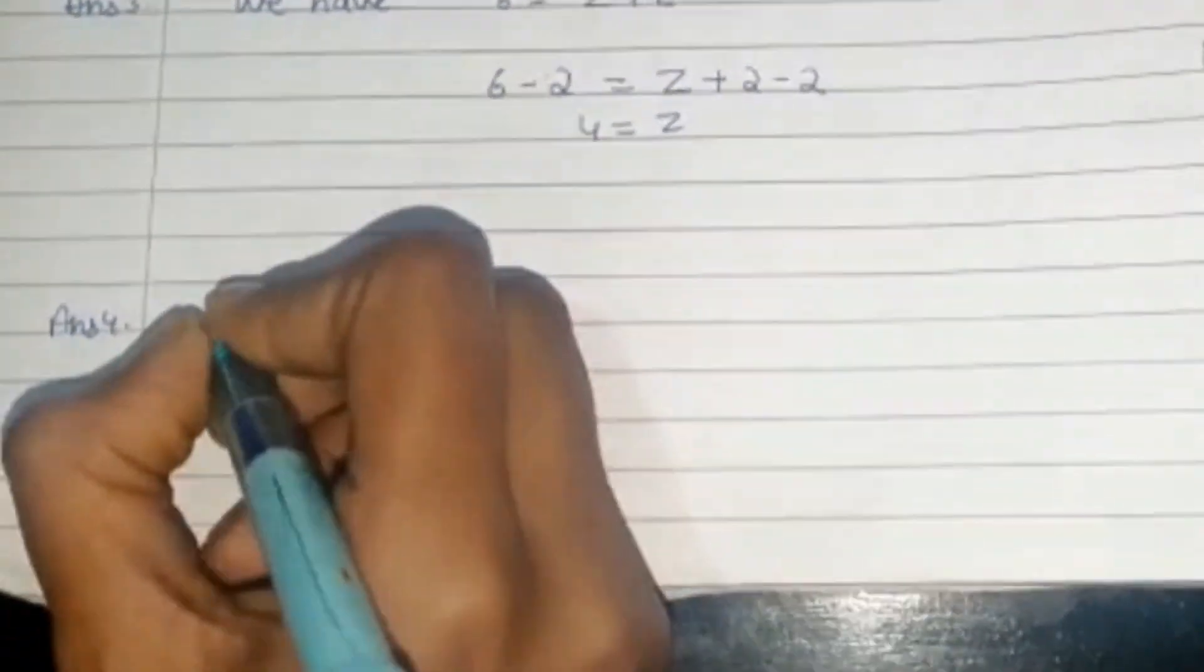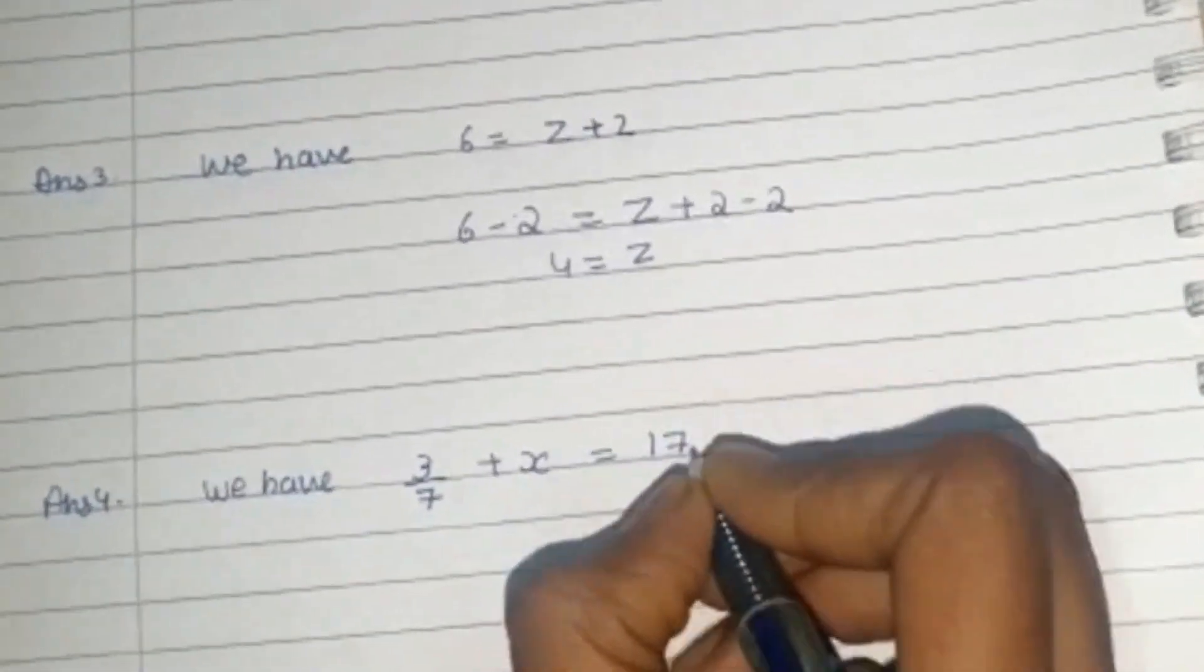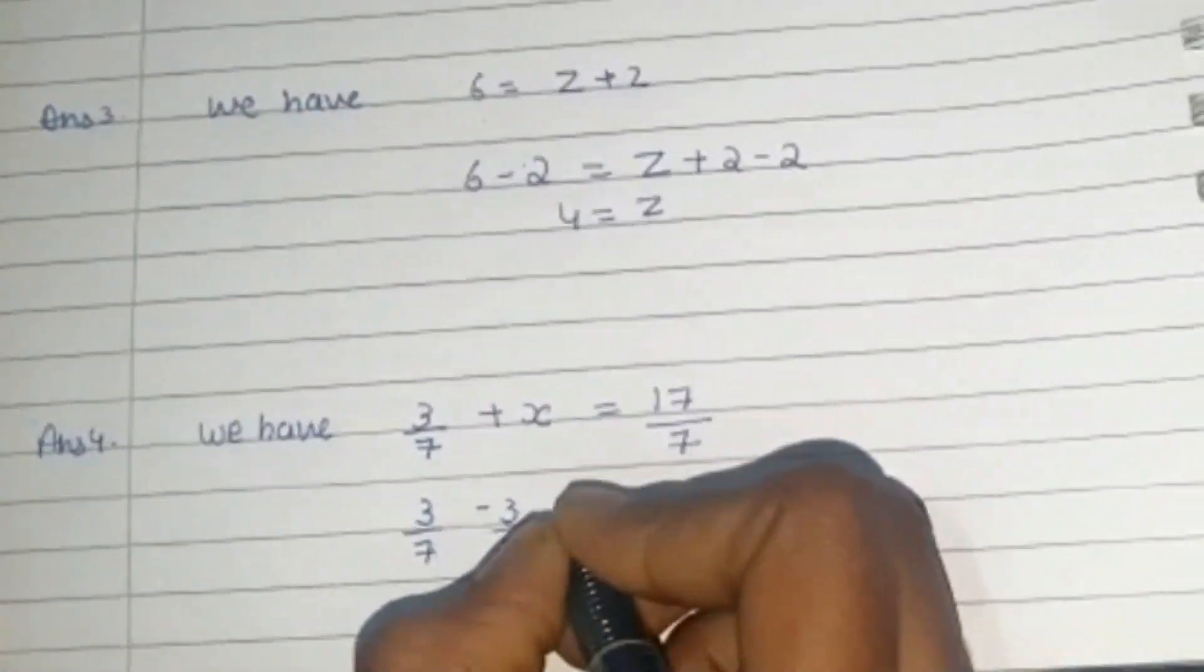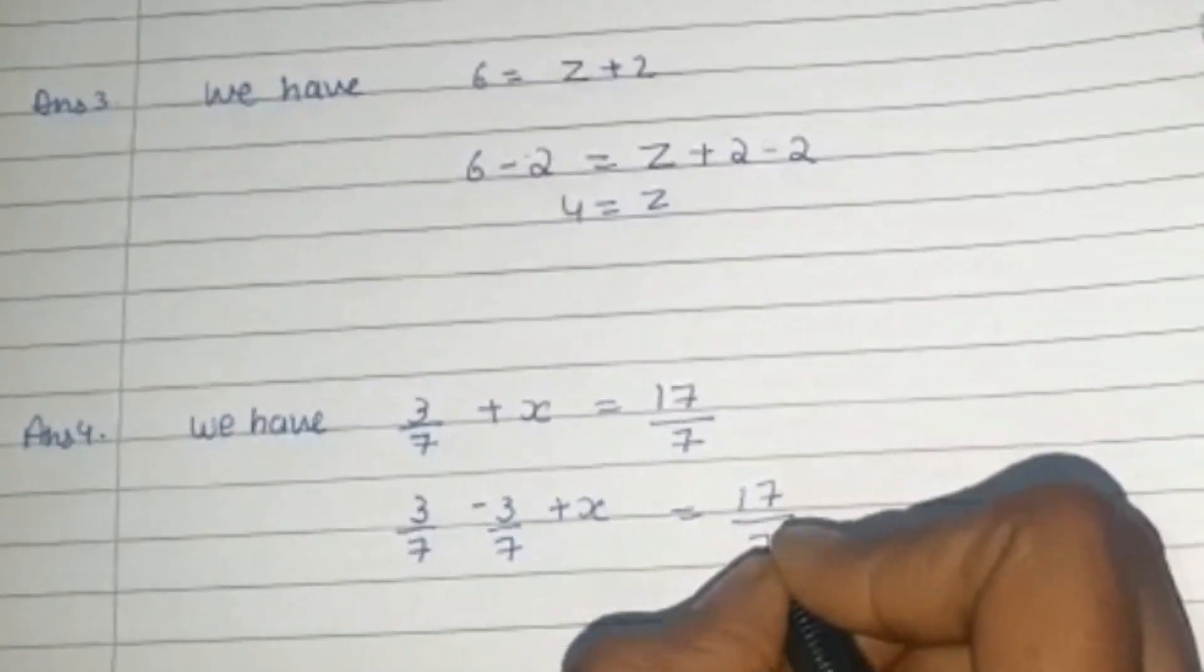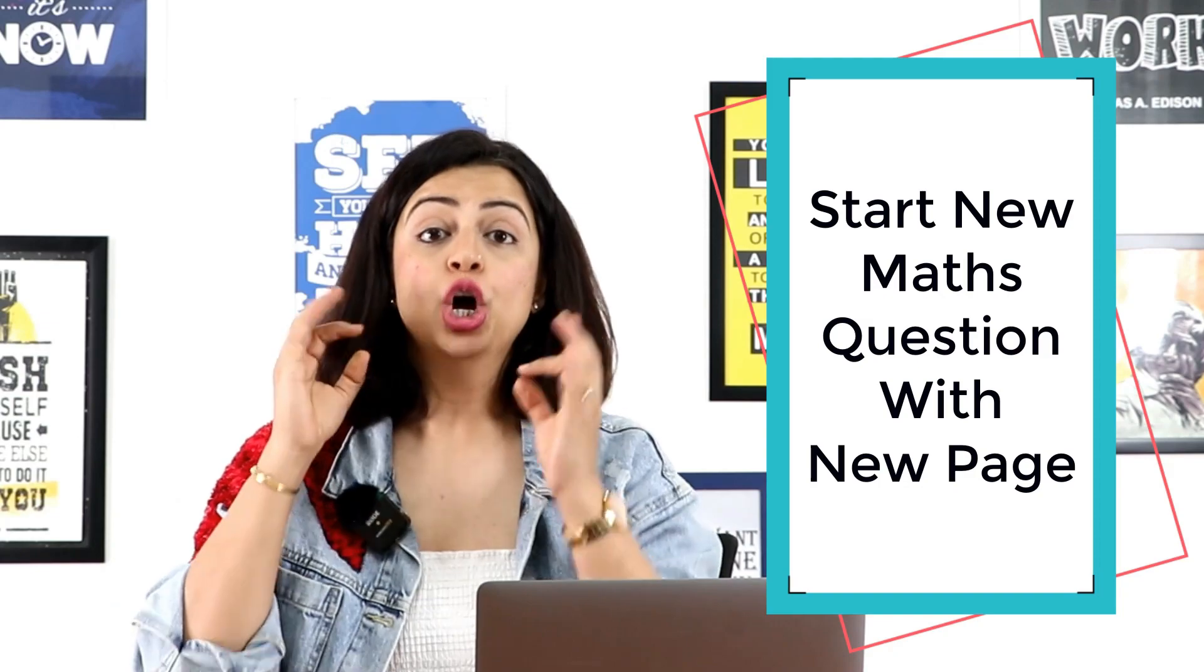Another common mistake, jo hum sab log karte hai, specially maths ke andar, woh ye hoti hai, hum agar question ko start karte hai, toh hum start karte hai niche se, alright, jab humare paas two or three lines hoti hai, okay, and then we have to carry forward it to the another page. Aur aisa karne se, at times plus minus mein convert ho jate hai, minus plus mein kaise convert ho jate hai, we just don't know. So, always make sure ki jab bhi aapko maths ka koi bhi naya sum start karna hai, you have to start it from a brand new page to avoid these calculations mistakes.